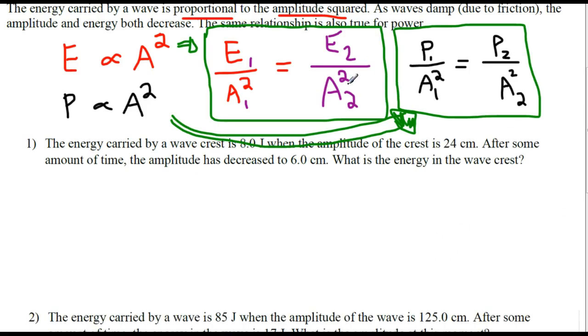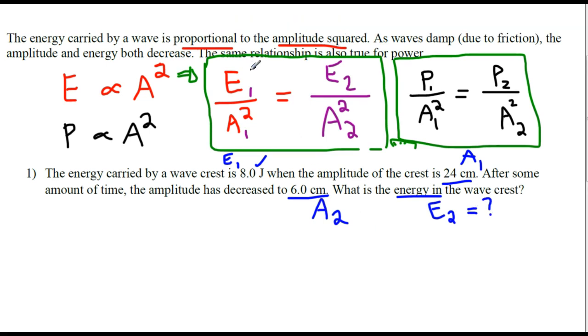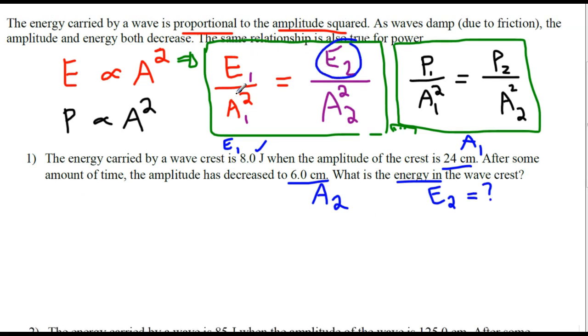So real quick, let me just point out how these problems look and what we're doing. We're given here, the energy carried by a wave crest is 8 joules, that's E1. When the amplitude is 24 centimeters, that's A1. In some amount of time, the amplitude decreases to 6 centimeters, that's a new, different amplitude. So what's the new energy at this new amplitude? That's my unknown E2. You can see they've asked us to calculate E2 while giving these three values.